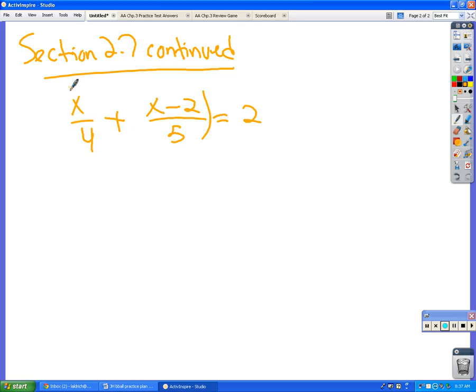So really what we're doing is multiplying by 4 times 5, so that when I multiply 4 times 5 times x over 4, the 4s cancel, right? And it gives me 5x. And when I multiply 4 times 5 times this one now, the 5s cancel, right? And that gives you 4 times x minus 2 equals 40.